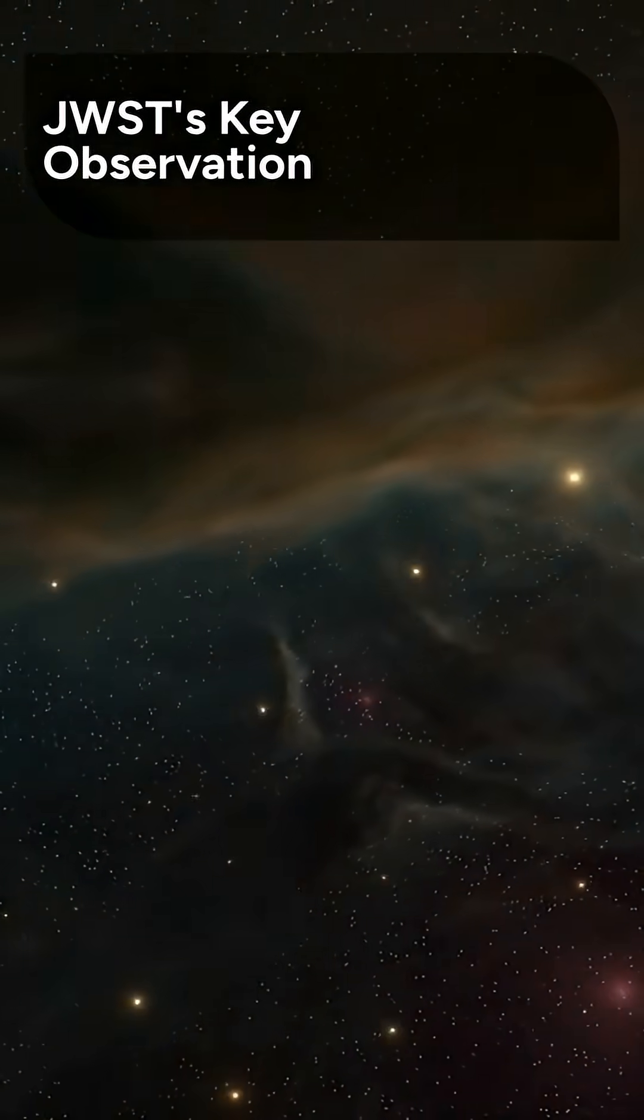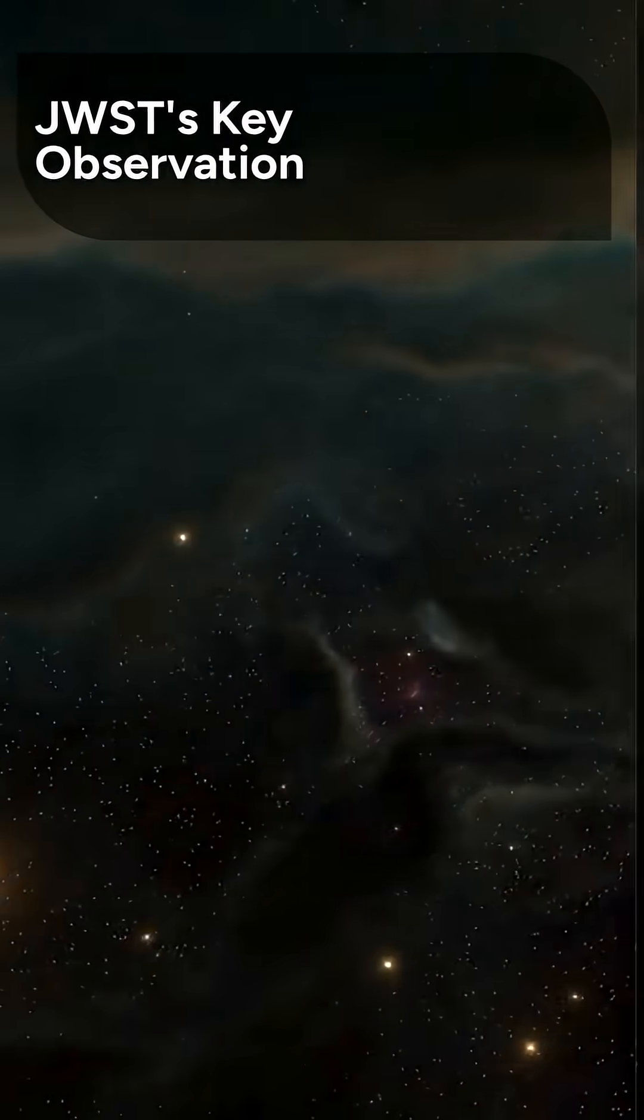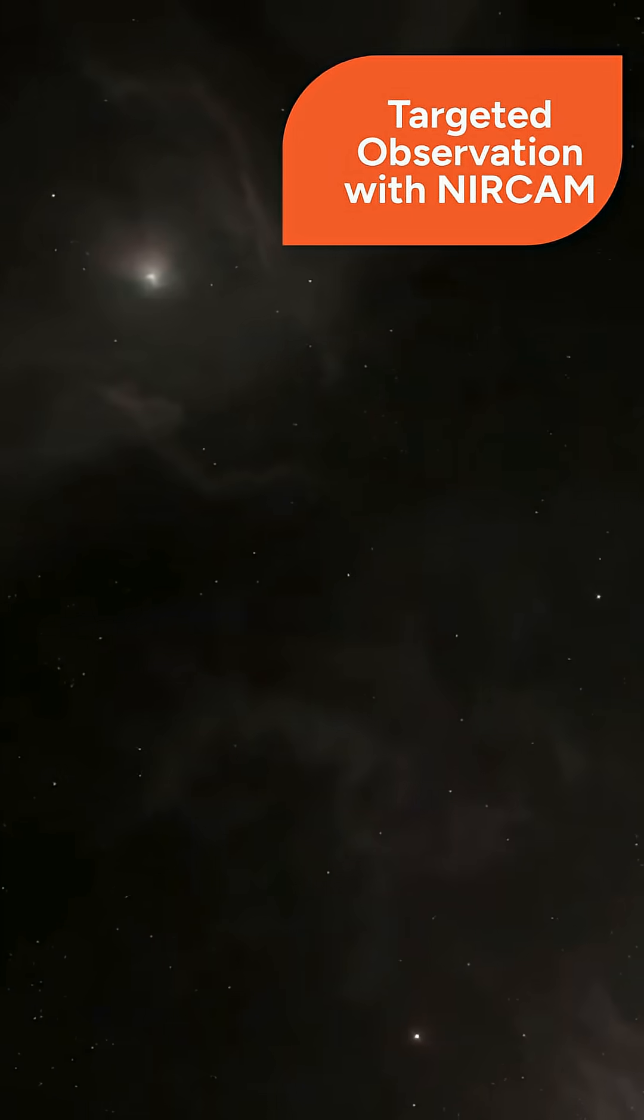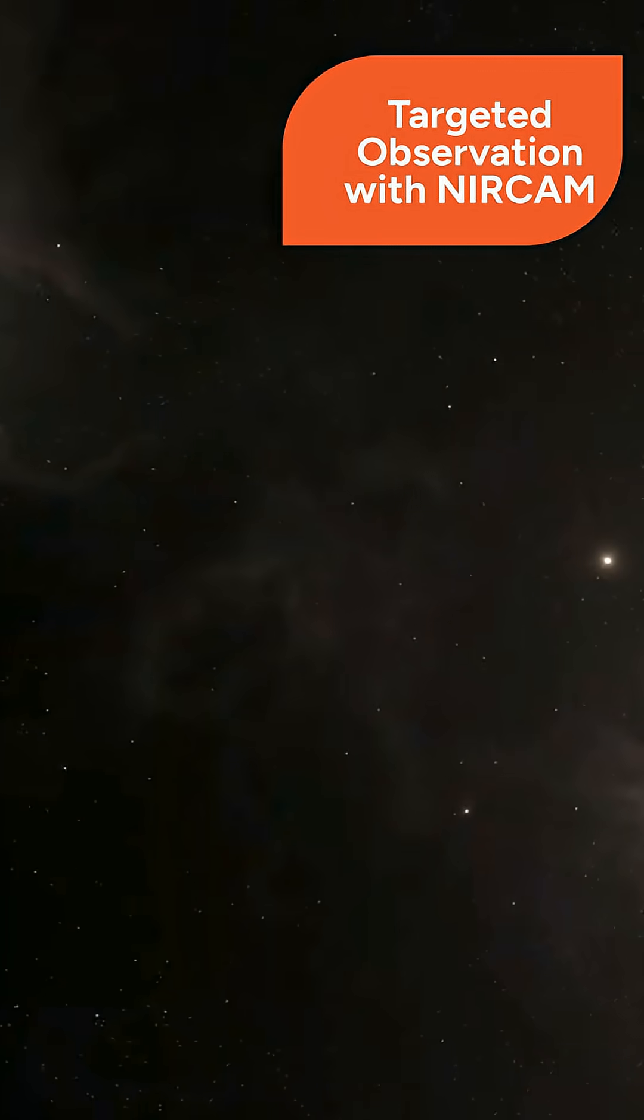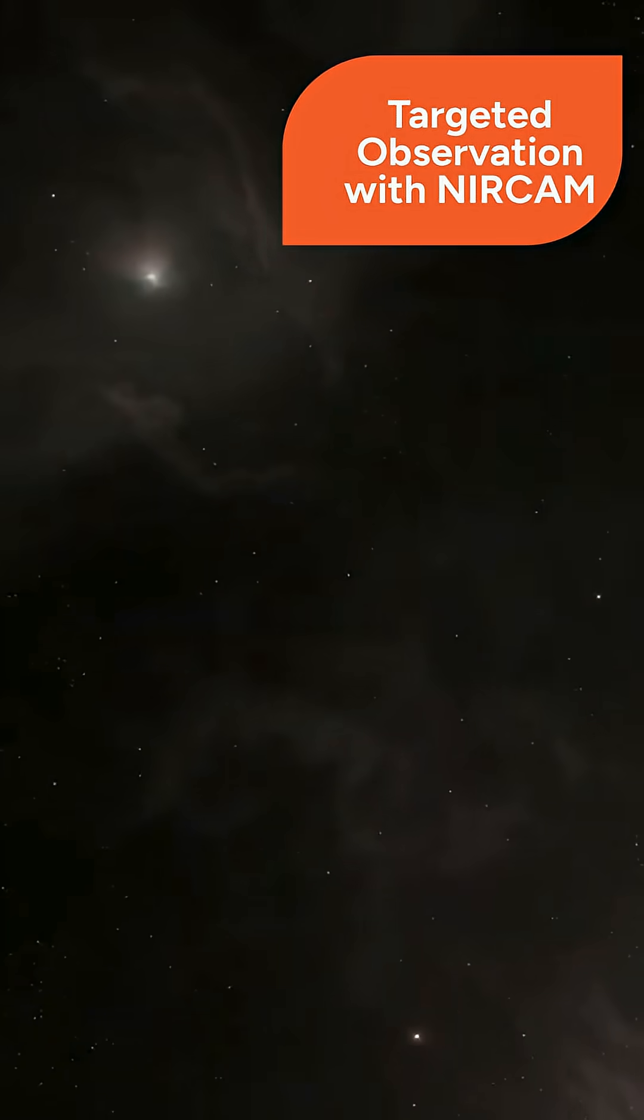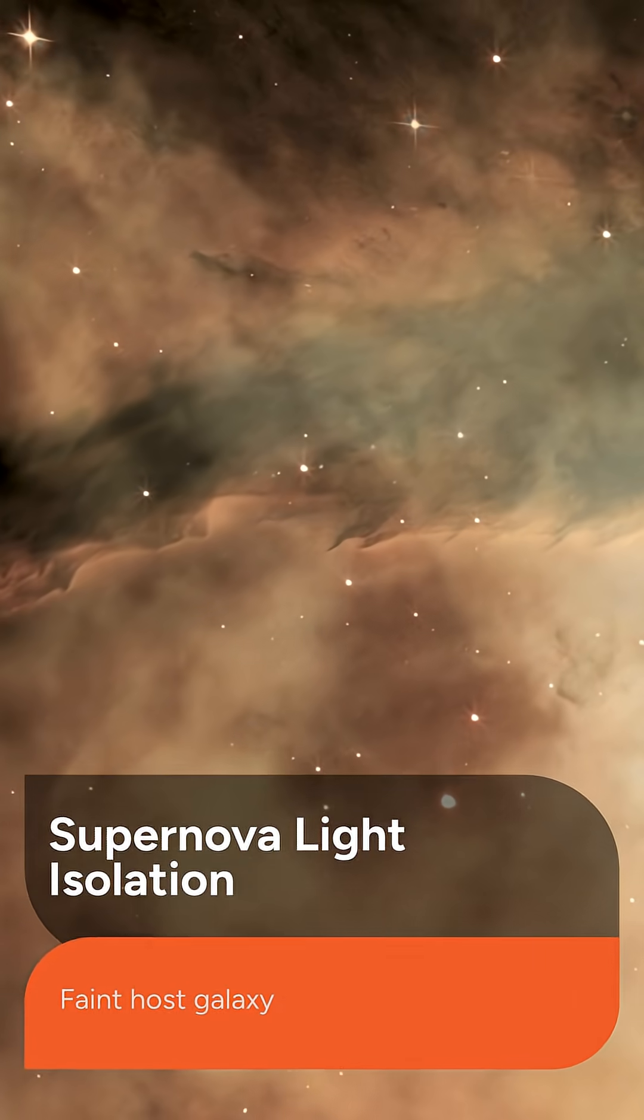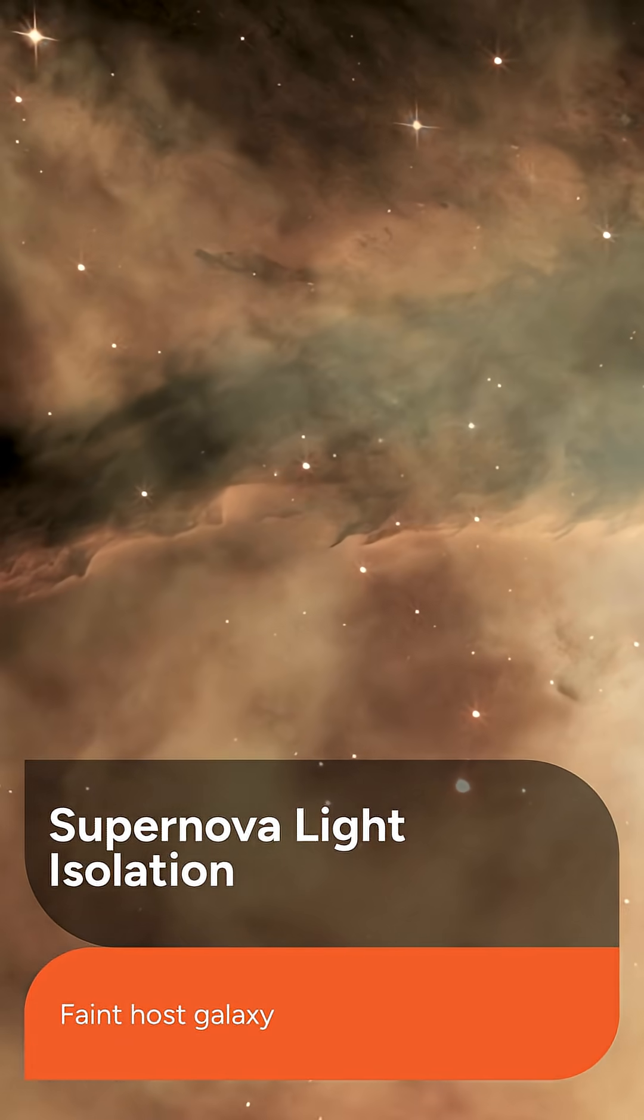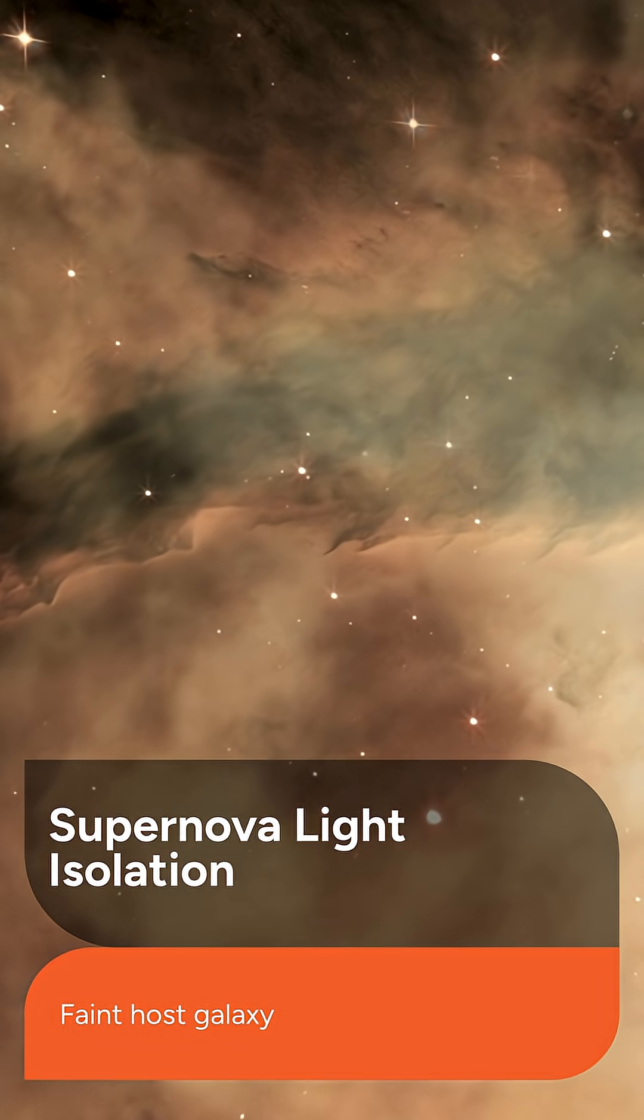The crucial data came from the James Webb Space Telescope. Targeted observations were conducted using JWST's Near Infrared Camera, or NIRCAM, approximately 110 days after the burst. These powerful observations allowed scientists to successfully separate the light of the explosion from its incredibly faint underlying host galaxy.